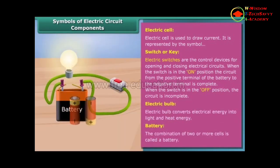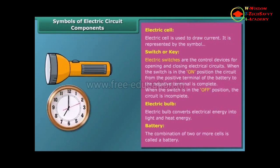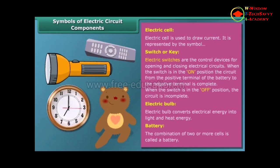The combination of two or more cells is called a battery. In a battery, the positive terminal of one cell is connected to the negative terminal of the next cell. Many devices such as torches, wall clocks and watches, toys, and TV remote controls are battery operated devices.